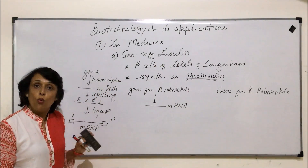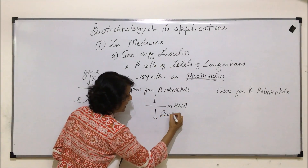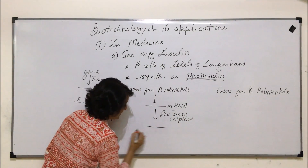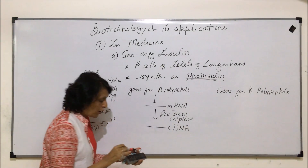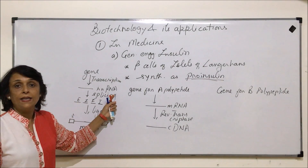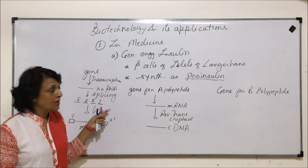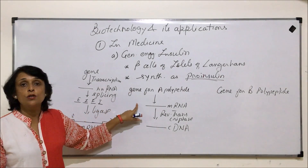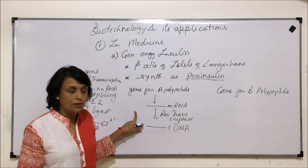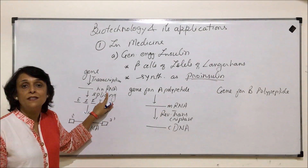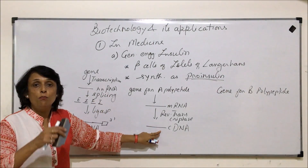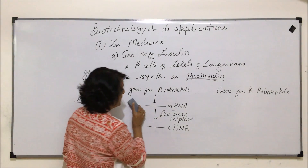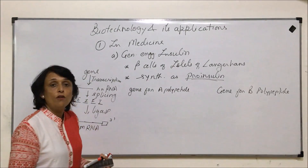What scientists did in this case is they isolated this mRNA — which has only the coding part — and then using reverse transcriptase, converted it into a DNA strand. This DNA was known as cDNA. The reason for doing this: for splicing and ligation we need enzymes, and these are eukaryotic enzymes because insulin is a eukaryotic protein, whereas the host cells used are E. coli, which are prokaryotic cells. Prokaryotic cells do not have enzymes for splicing and ligation, so to overcome that problem, cDNA was used directly.